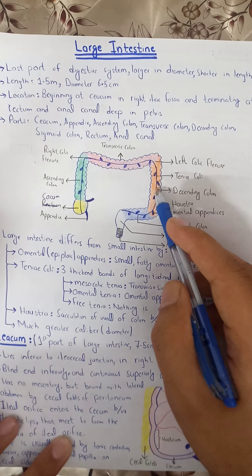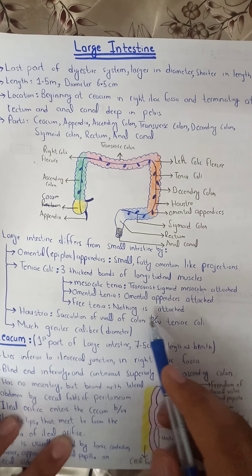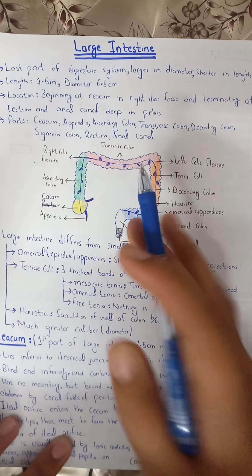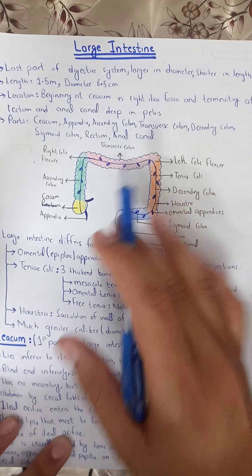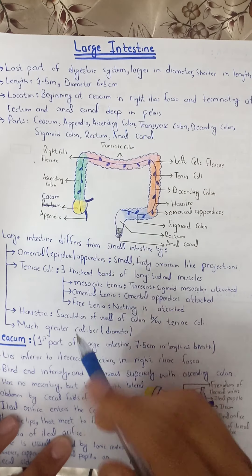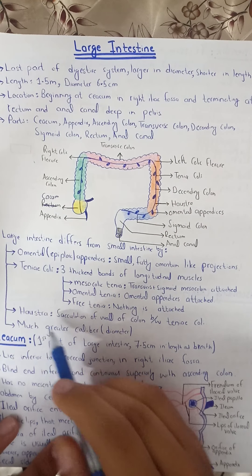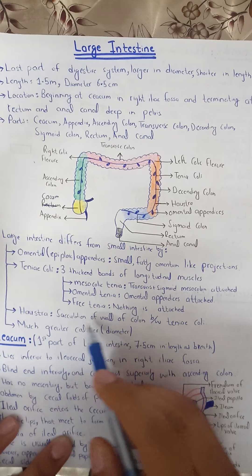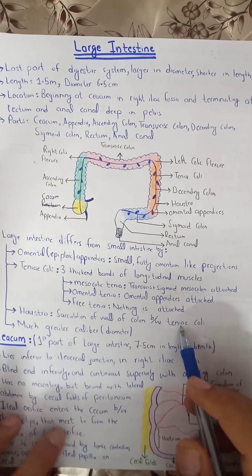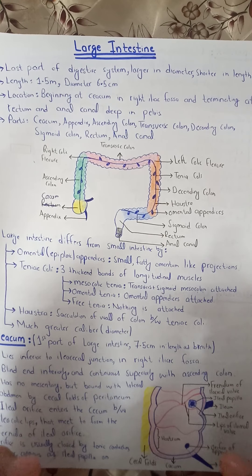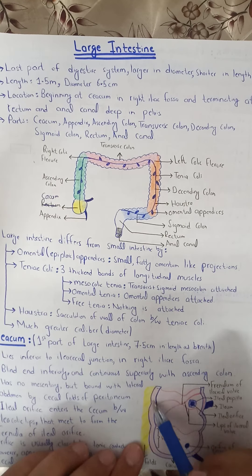The free teniae has nothing attached to the wall of the colon. Between the teniae, there are small sac-like pouches called haustra.